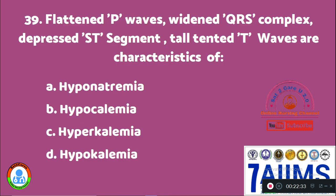Question 39: Flattened P waves, widened QRS complex, depressed ST segment, and tall tented T waves are characteristics of: Option A: hyponatremia. Option B: hypocalcemia. Option C: hyperkalemia. Option D: hypokalemia. The right answer is Option C, hyperkalemia.